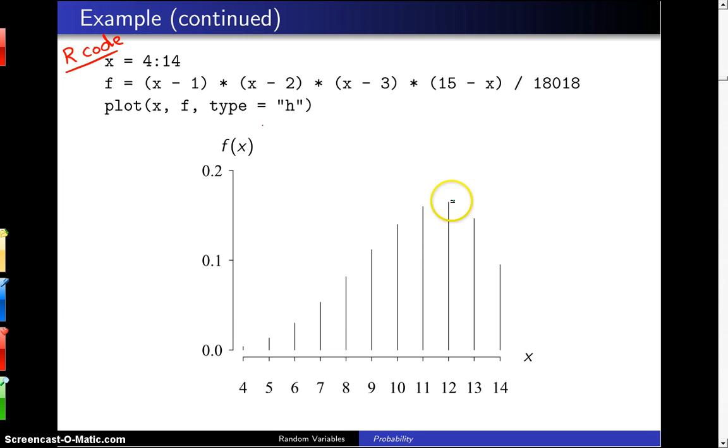using the type equals H argument to get them as spikes, here is the probability mass function of the second to largest. Notice in our realization, we got an 8, and that's actually smaller than average, that's kind of a bit out in the left hand tail. And notice the most likely value, which we'll define a little bit later as the population mode, is 12 is the most likely value for you to get.